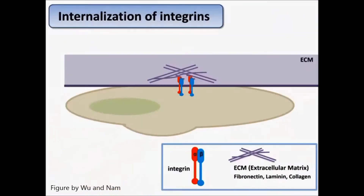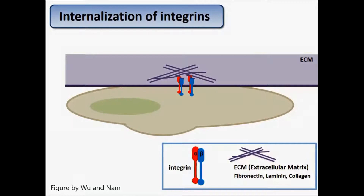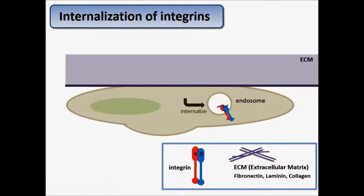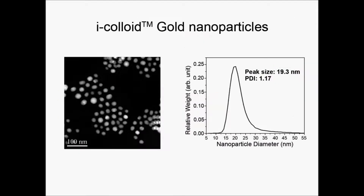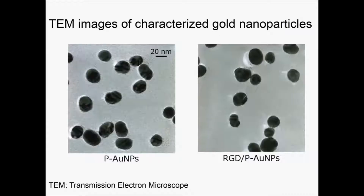After binding to fibronectin, integrins will be internalized into cells. In our study, we conjugated gold nanoparticles with RGD peptides. The size of the gold nanoparticles is about 20 nanometers. Here are the images of pegylated gold nanoparticles without RGD peptides and with RGD peptides conjugated.